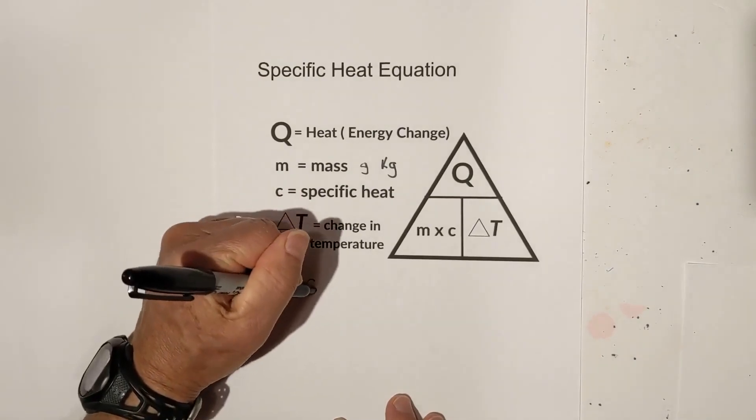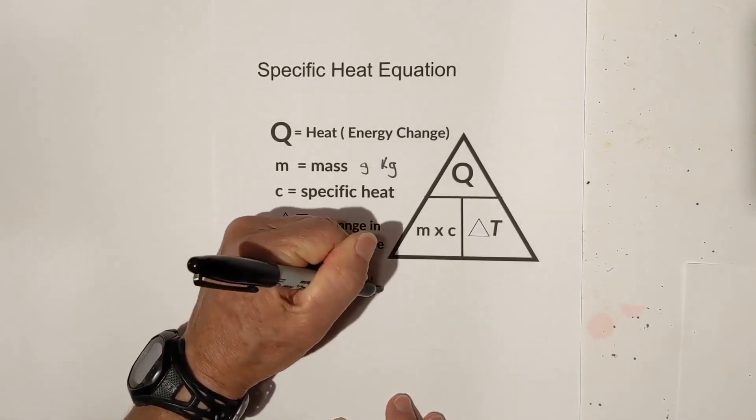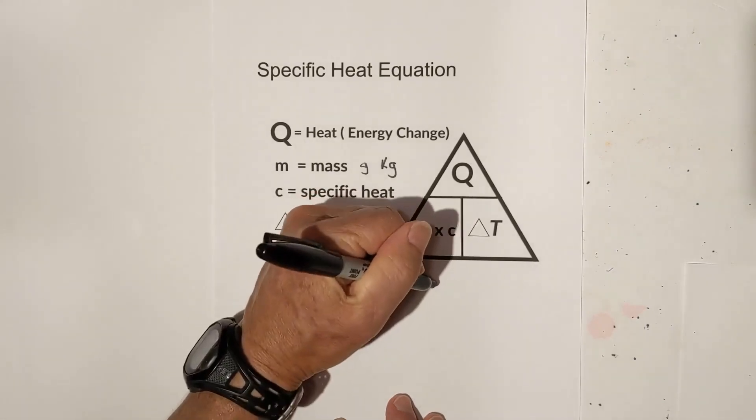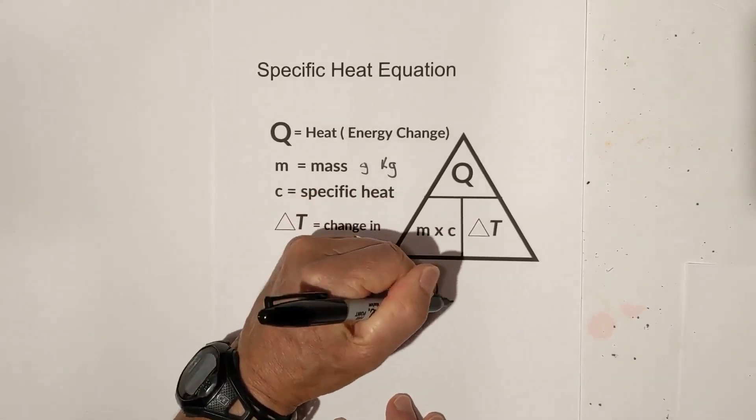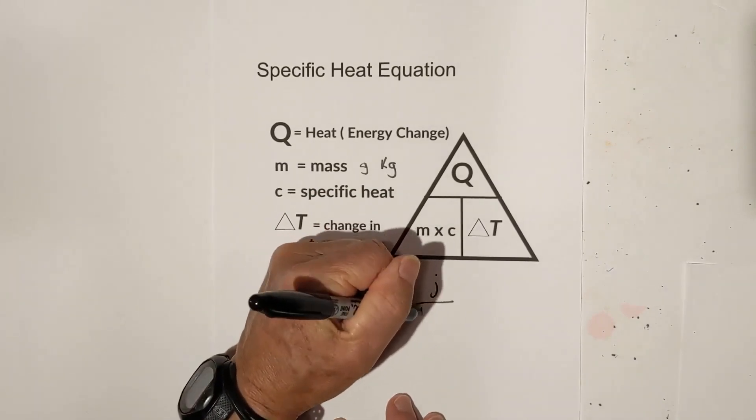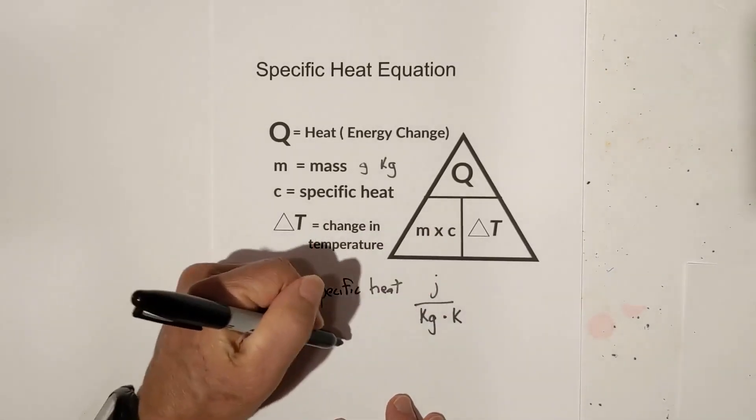For specific heat, you'll see it in different ways. The units are joules over grams—sometimes kilograms times Kelvin, or joules over grams in Celsius.